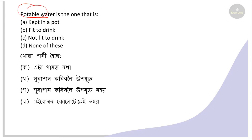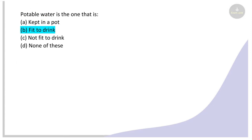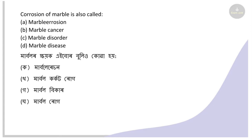Next: Potable water is water that is — fit to drink, not fit to drink, or none of these? We drink water every day — in Assamese we say 'khowa pani' but in English, potable water means drinking water. The right answer is fit to drink.